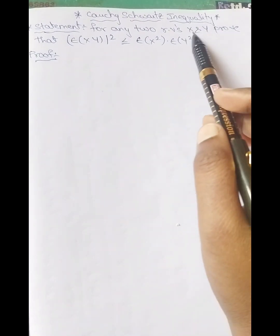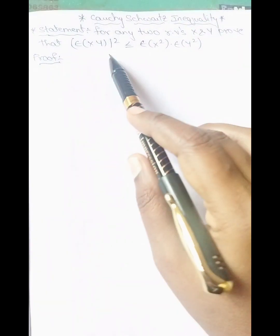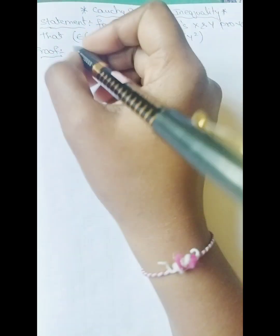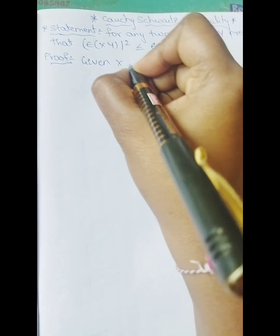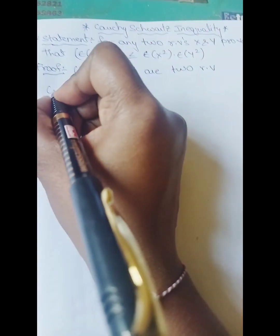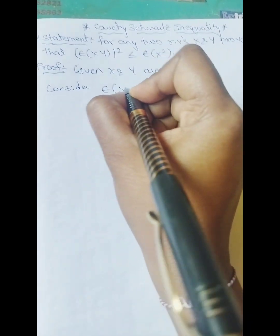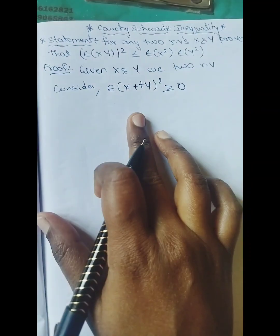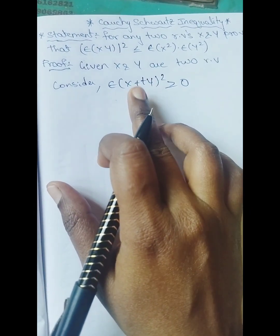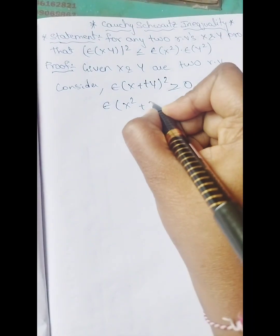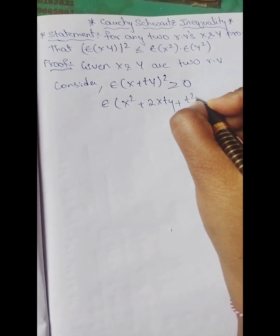Suppose if you take any two random variables x and y, you have to prove the Cauchy-Schwarz Inequality: expectation of xy whole square less than or equal to expectation of x square into expectation of y square. Given: x and y are two random variables. Let us consider expectation of (x + ty) whole square greater than or equal to 0. We know that (a + b)² = a² + 2ab + b², so substituting: expectation of x² + 2xty + t²y².